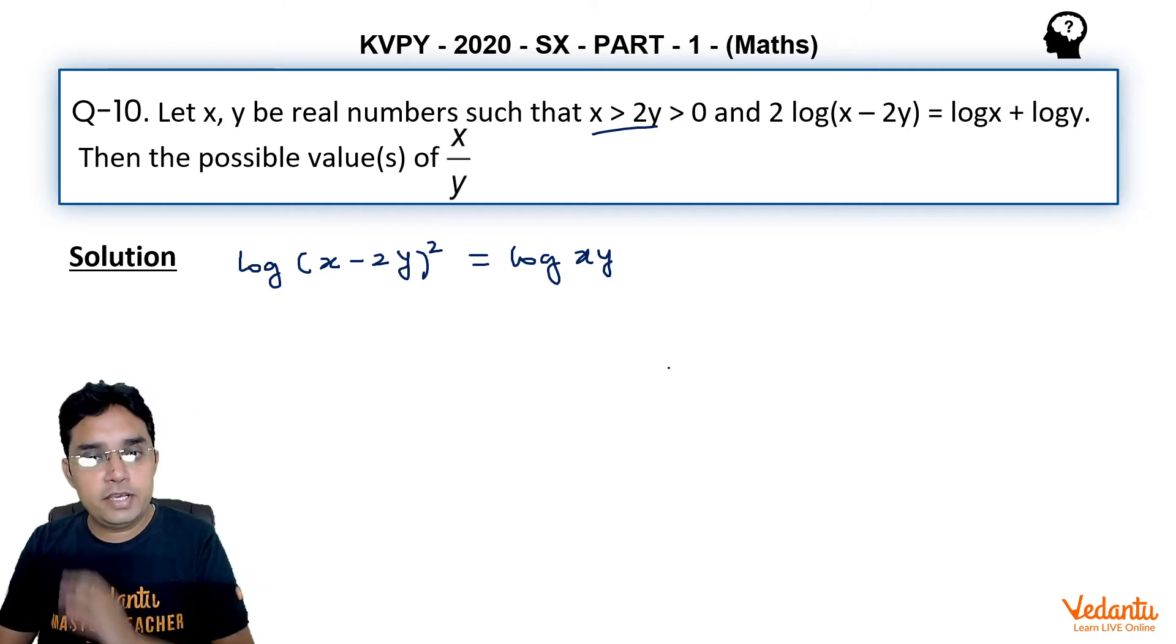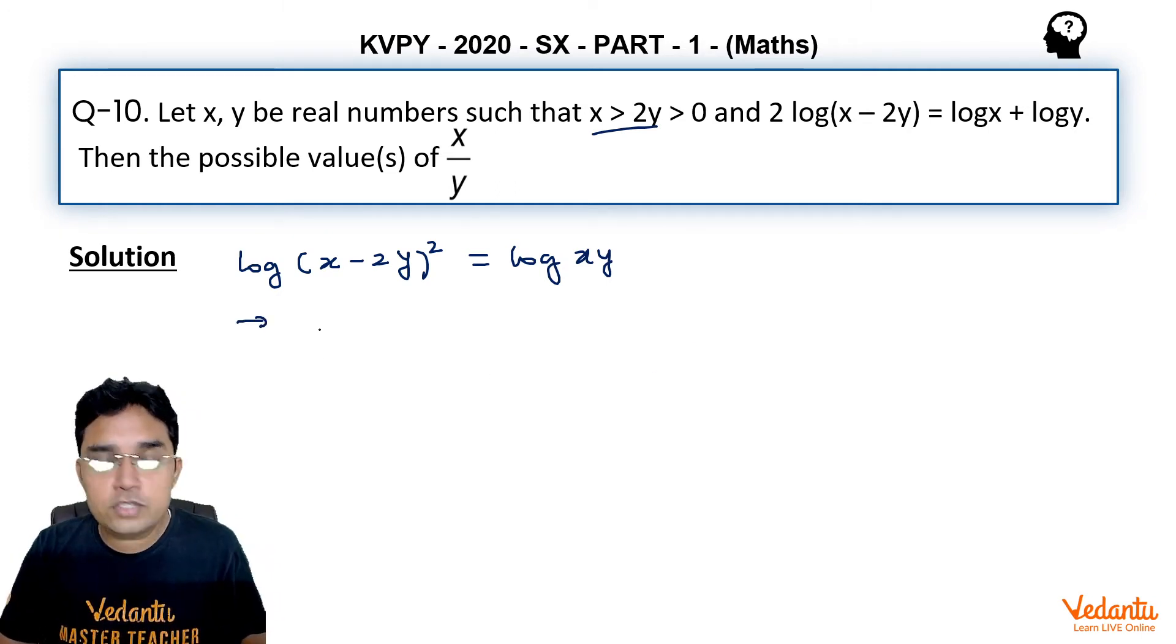x is positive, y is positive. Now I can remove the logs, and we get (x - 2y)^2 = xy.